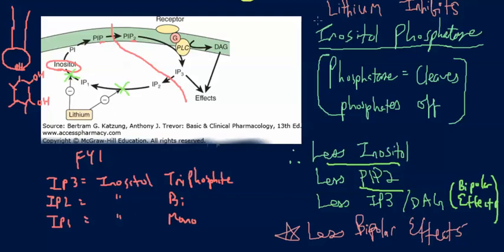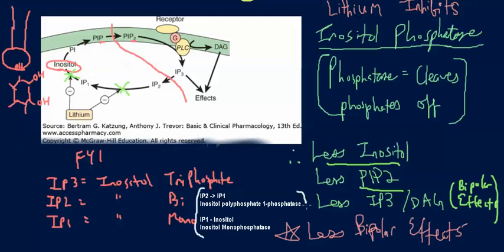The specific enzymes lithium inhibits are: from IP2 to IP1, it inhibits inositol polyphosphate 1-phosphatase; from IP1 to inositol, it inhibits inositol monophosphatase. The broad term for both is inositol phosphatase. Ultimately, lithium inhibits the regeneration of inositol.